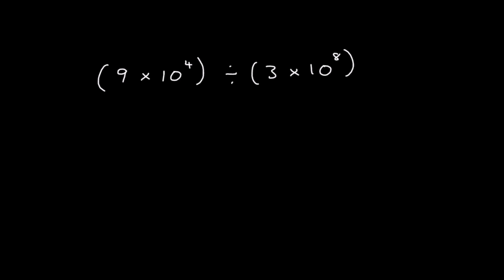This question is division but it's the same process. We've got the two numbers at the front and we divide them. So 9 divided by 3 is 3. And we've got 10 to the power of 4 divided by 10 to the power of 8. When we divide indices we subtract the powers, so 4 take away 8 is negative 4. That's the answer.